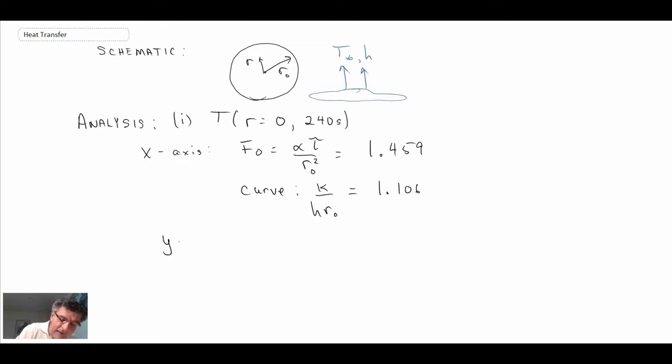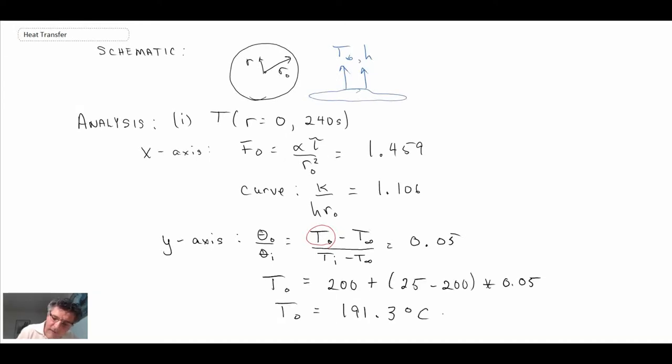So that gave us the y-axis value and that is theta naught over theta i. And from that we can go ahead and calculate T naught because that's what we're looking for, the centerline temperature. And what do we get? We get 191.3 degrees Celsius. When we did this using the approximate solution from the last segment, we calculated 192.1 degrees Celsius. So you can see we're pretty close. We're a little bit lower with the Heisler chart than we were using the approximate analysis.